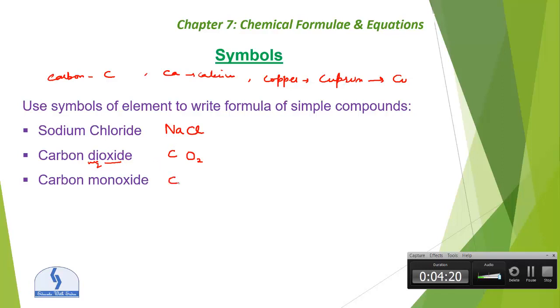Right, now carbon monoxide. Carbon has a symbol of C, oxide is O, but this is mono. Mono means 1, so it means CO is the formula of carbon monoxide. So we are using the symbols for writing the formula of a simple compound.